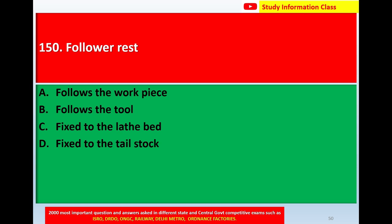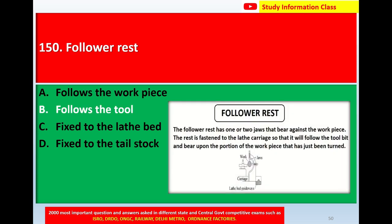For question number 149, the correct answer is Option B, pitch of the rivets. Question number 150: The follower rest — Option A: follows the workpiece, Option B: follows the tool, Option C: is fixed to the lathe bed, Option D: is fixed to the tailstock. The correct answer is Option B, follows the tool. The follower rest has one or two jaws that bear against the workpiece; the rest is fastened to the lathe carriage so that it follows the tool bit and bears upon the portion of the workpiece that has just been machined.